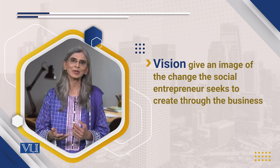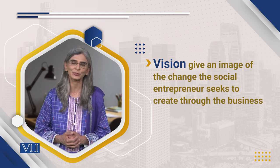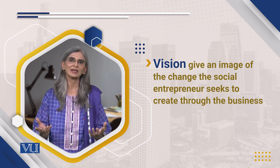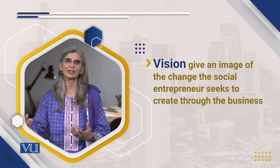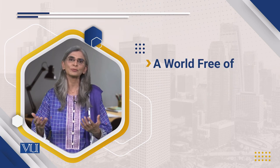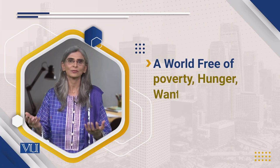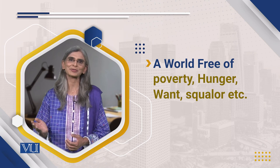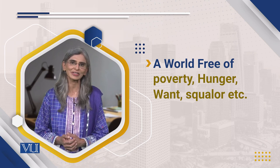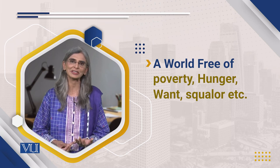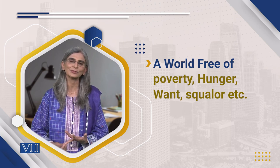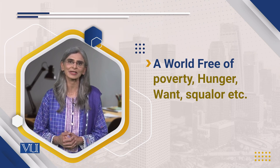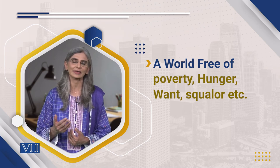For example, if an organization or a social entrepreneur is thinking about poverty, the vision might be: a world free of poverty, hunger, want, or squalor. This means an ideal situation — we keep in the vision a world in which no need will go unmet.